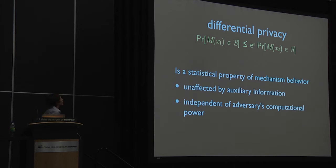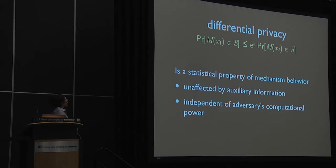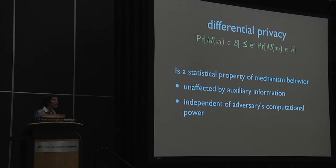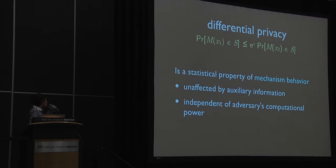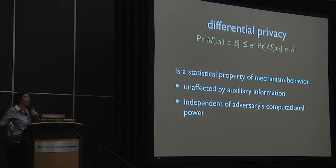Differential privacy differs from other notions of privacy in that it's a property of the mechanism, not of an outcome. You can't say that the number five is differentially private — the process that produced it is. Because it's a property of the mechanism, there's no need to model outside information available to an adversary, and no need to model an adversary at all. There are no computational or other assumptions on an adversary. You immediately and for free neutralize all linkage attacks, including those made with future datasets you haven't even imagined.